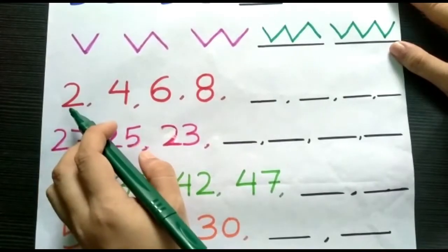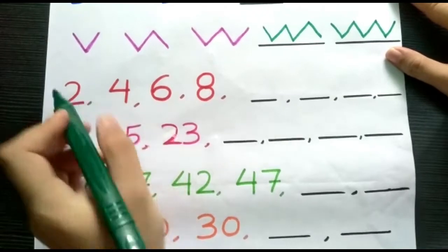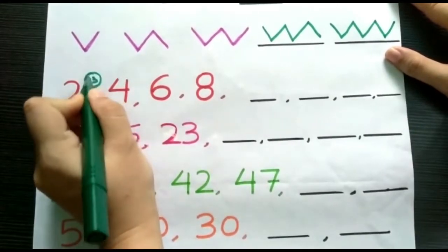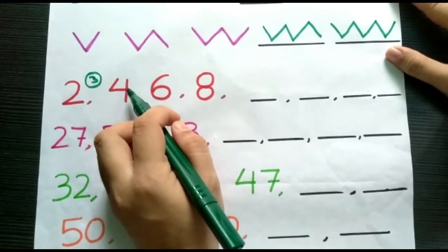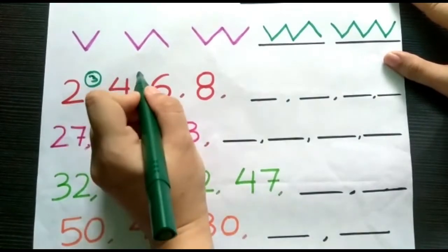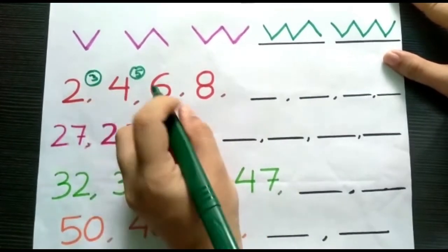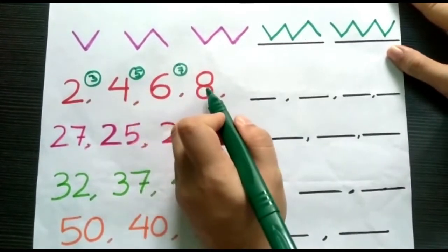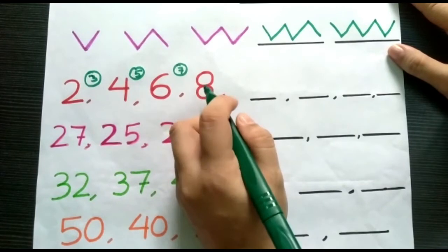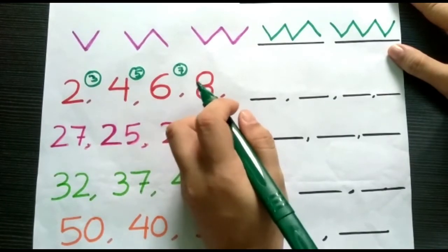Now, here we have 2. After 2, we have 4. So children, here number 3 is missing. After 4, we have 6, which means number 5 is missing. Now, after 6, we have number 8, which means number 7 is missing. So we can say that there is a certain pattern following in these numbers.